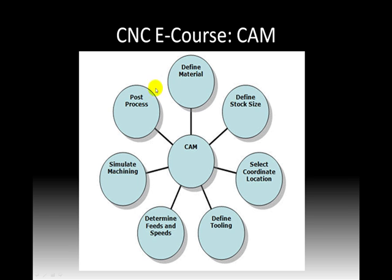Here's a graphic of the various things we need to do during CAM. Not all of these are done every single time, but this is the overview. We need to define the material, define the stock size, select coordinates, determine our tooling and our feeds and speeds, simulate the machining, and then post-process.